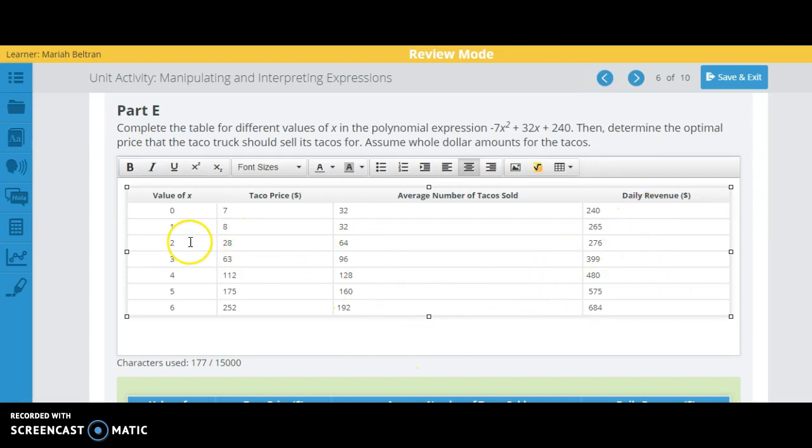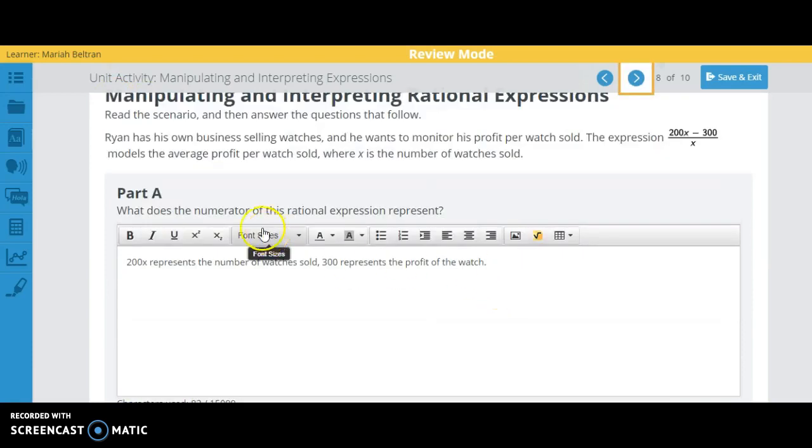And then, for your revenue, you're going to be plugging all of these numbers in for here. Now, for this one here, this guy sells watches, and the expression 200x minus 300 over x models the average profit per watch sold, where x is the number of watches sold.